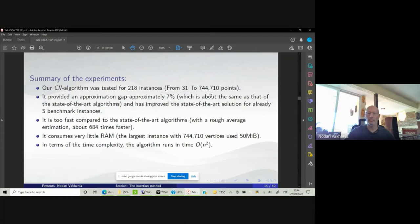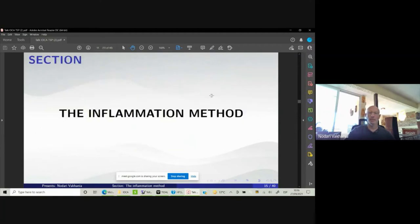As to the quality of the solution that we obtain, in average, it gives the same approximation gap as the state-of-the-art algorithms. It is about 7% and at the same time we were able to improve the state-of-the-art solutions for several problem instances, benchmark instances. Now we turn to the next method that we also use for the same problem, the traveling salesman problem.